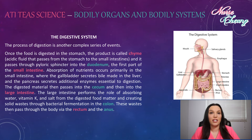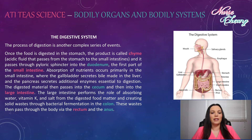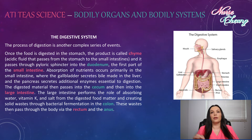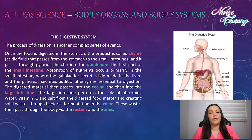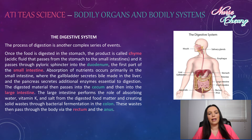Once the food is digested in the stomach, the product is called chyme — an acidic fluid that passes from the stomach to the small intestine. It passes through the pyloric sphincter into the duodenum, the first part of the small intestine. Absorption of nutrients occurs primarily in the small intestine, where the gallbladder secretes bile made in the liver, and the pancreas secretes additional enzymes essential for digestion.